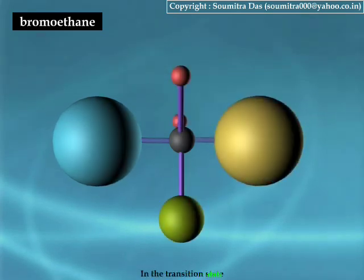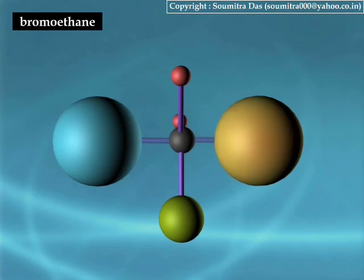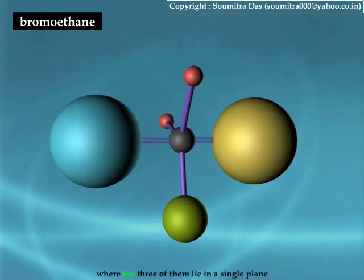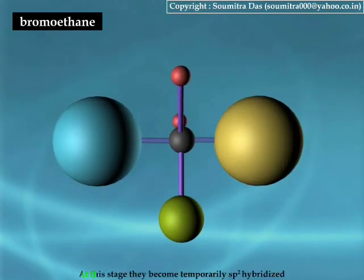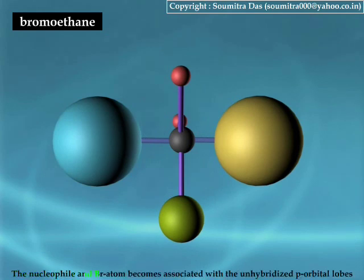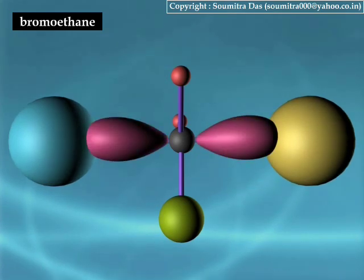In the transition state, the negative charge of the nucleophile is transferred to bromine. The hydrogen atoms and the methyl group pass through a position where the three of them lie in a single plane. At this stage, they become temporarily sp2-hybridized. The nucleophile and the bromine atom become associated with the unhybridized p-orbital lobes.